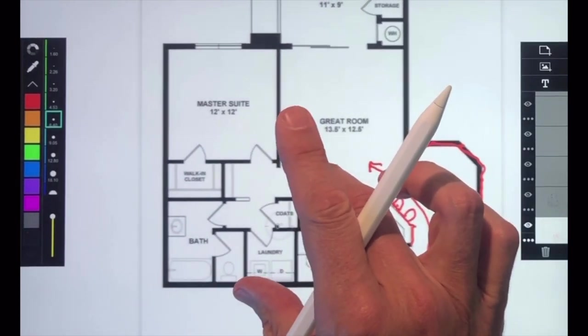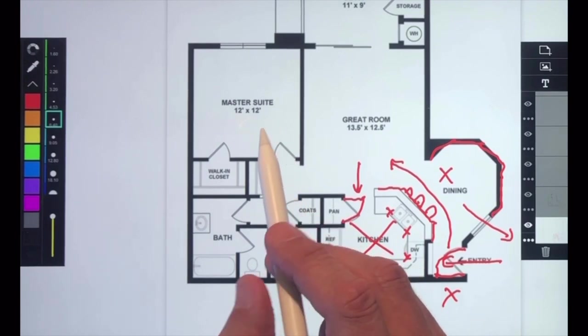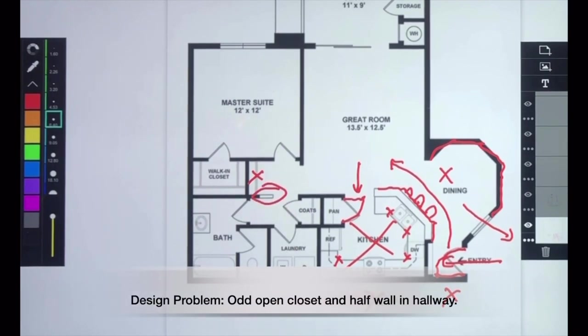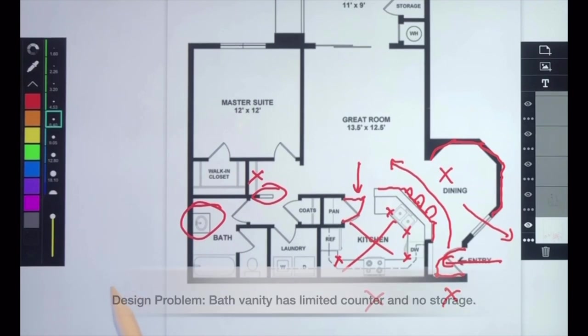If we look at some of the other spaces in the house, there's some problems too. Maybe not quite as terrible, but they do need fixing. I don't understand why we have an open closet in front of the master suite and this weird half wall, which I guess is where you put your martini before you go in to use the toilet. The bathroom is a segmented design with a separate toilet. Look at the vanity. No storage. It floats in the middle of the space. Really, really, really awkward.